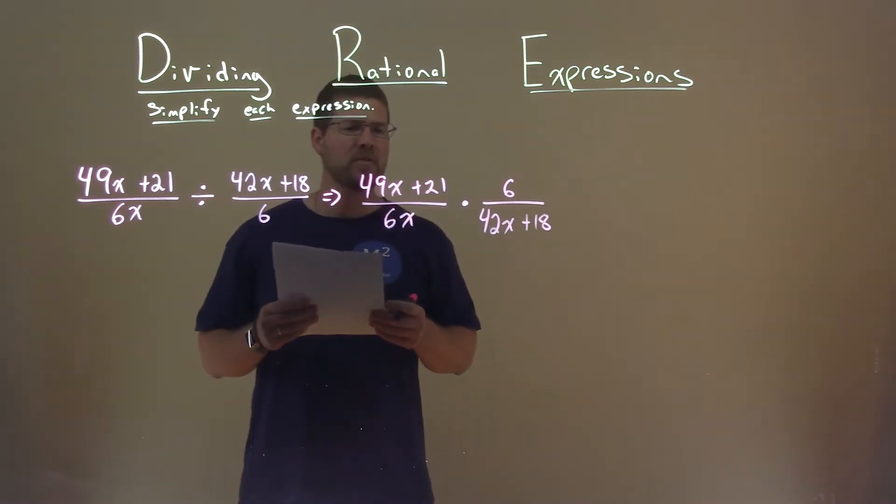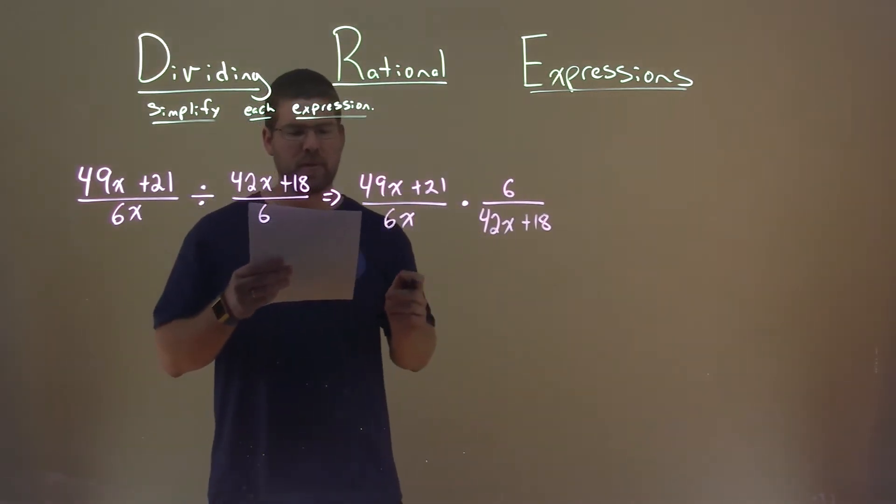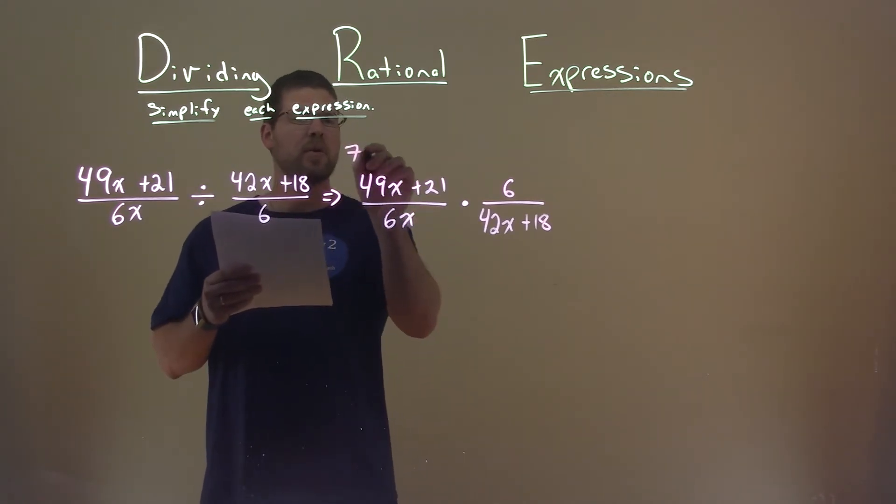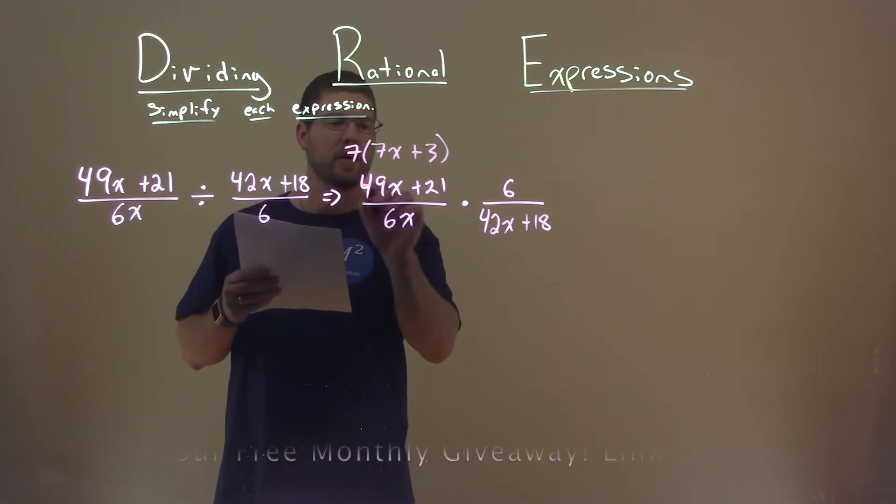All right, so now let's see if we can factor this a little bit. 49x plus 21, I can pull out a 7. Pulling out a 7 leaves me with 7x plus 3, so let's replace that.